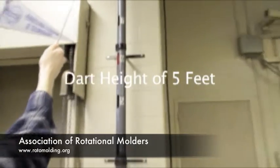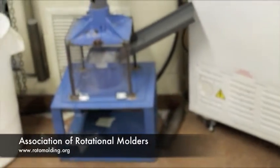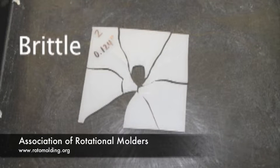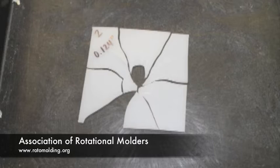Two types of failures include ductile failure and brittle failure. Ductile failure occurs when the dart elongates the sample and punctures a hole in the test specimen. Brittle failure occurs when the test specimen shatters or splits into two or more pieces.